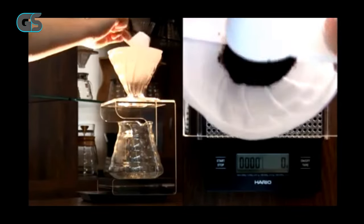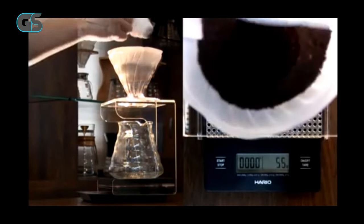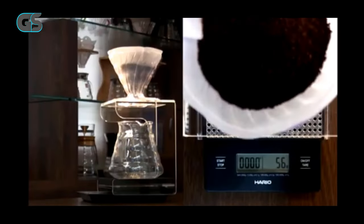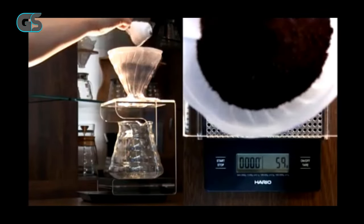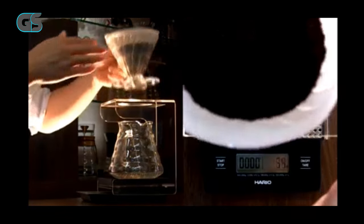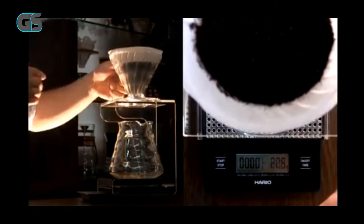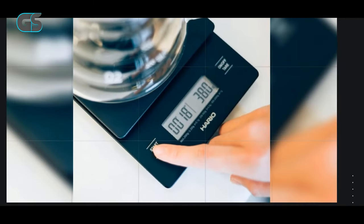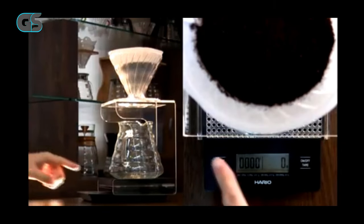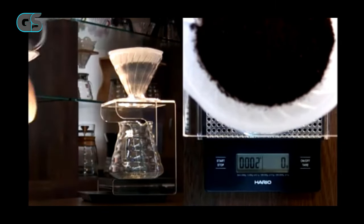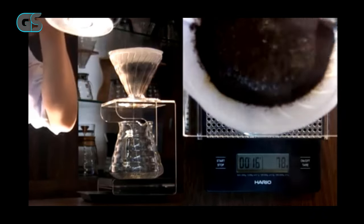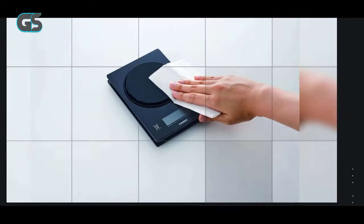What truly sets this scale apart is its precision. Its accurate measurements ensure that your coffee-to-water ratio is spot-on, resulting in a consistently flavorful cup every time. The tare functionality allows you to precisely measure your coffee grounds without the weight of the container affecting the reading. The timer pour over scale functionality is a stroke of genius. It measures the coffee and times the pour over process, ensuring you achieve the perfect extraction. The scale's sensitivity is impressive, responding quickly to changes in weight, allowing you to control your pour with finesse.